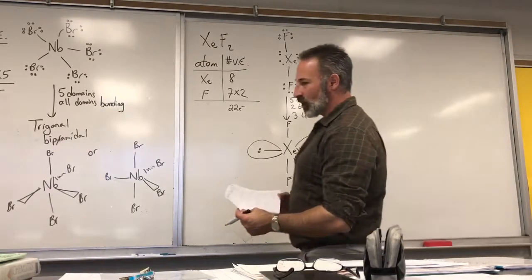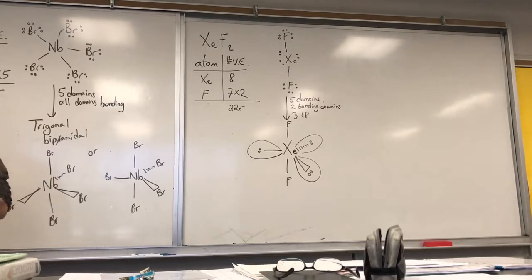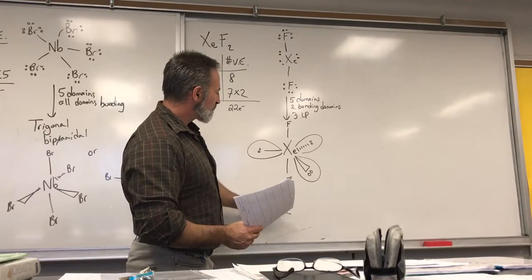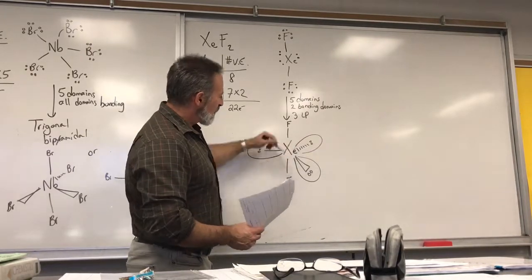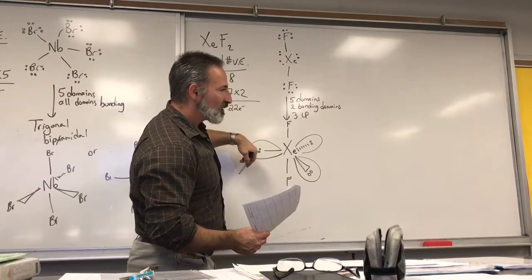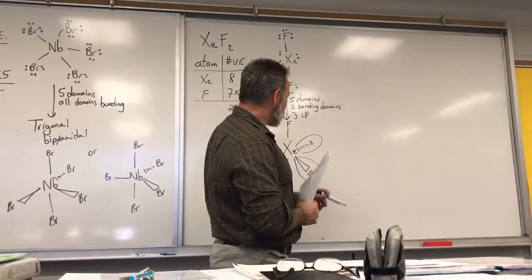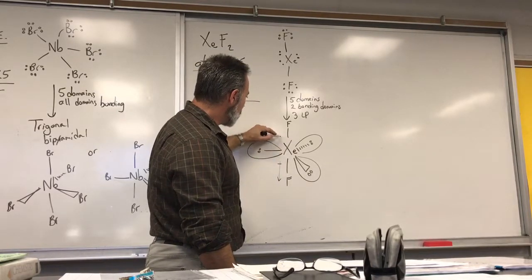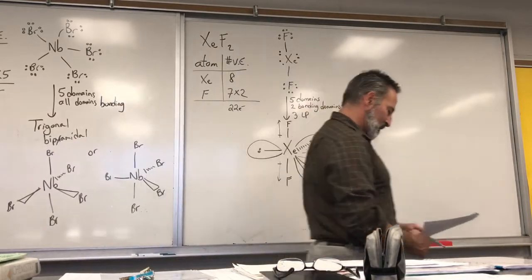Is this molecule polar? You can draw a line of symmetry through the fluorine atoms, splitting the lone pairs as well. So this molecule is nonpolar — even though it has polar bonds, the dipoles are pointed in opposite directions and they cancel. Due to symmetry, the molecule is actually nonpolar.